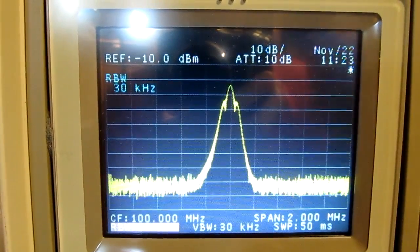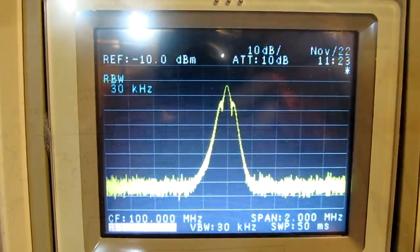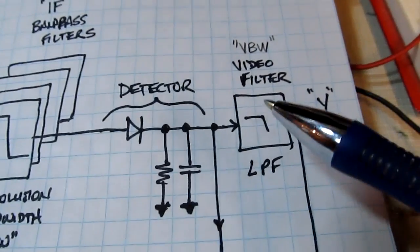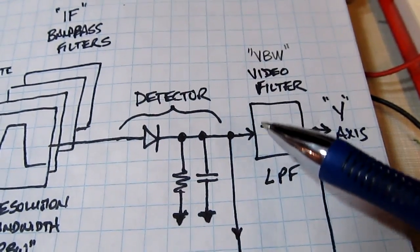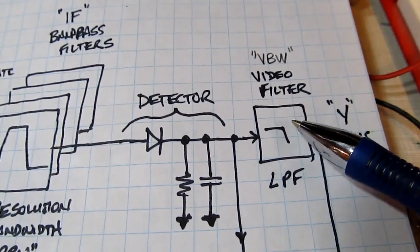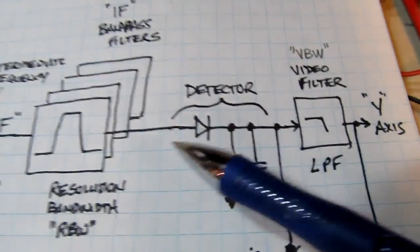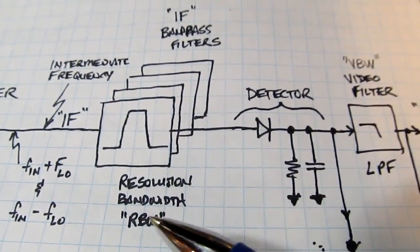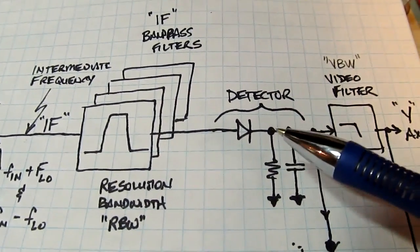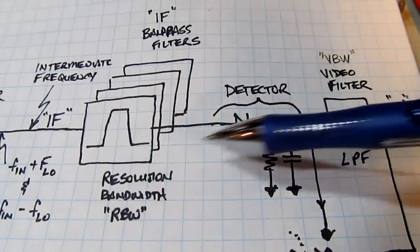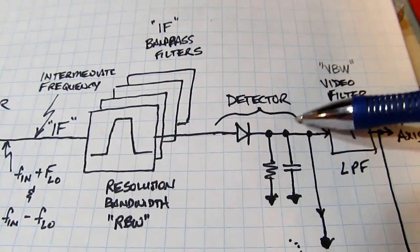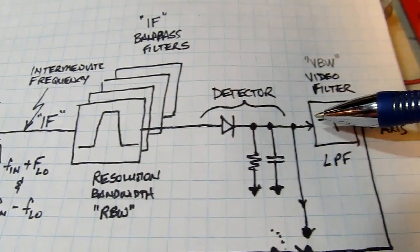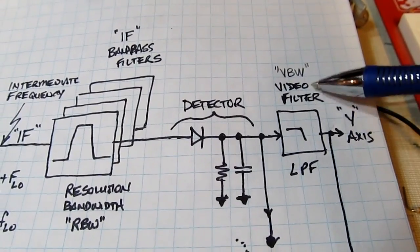Let's talk next about video bandwidth. Video bandwidth refers to essentially the bandwidth of a low-pass filter, LPF, that follows the detector. Because as we're sweeping frequencies through the resolution bandwidth, through the eyes of the spectrum analyzer, the detector is measuring that power. So over time, there is going to be noise in the output of this detector. And we can see that on the spectrum analyzer display, that there's some noise.